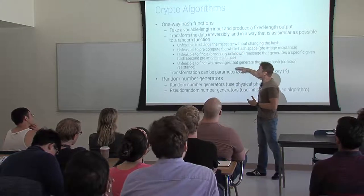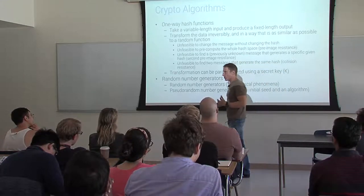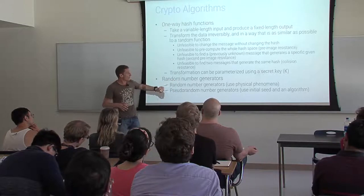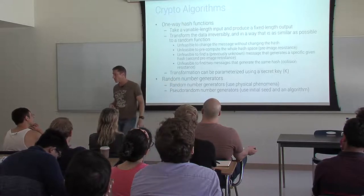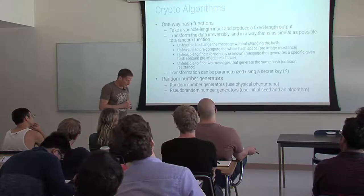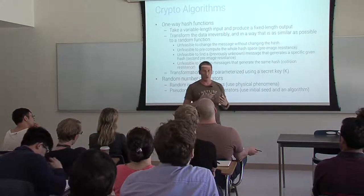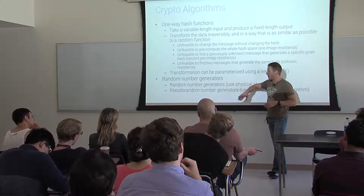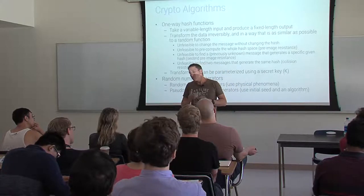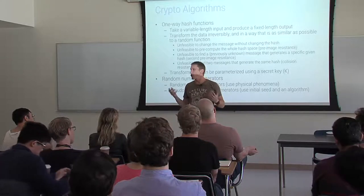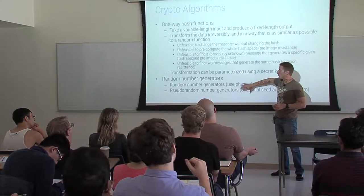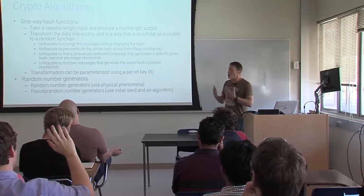You can parameterize the transformation using keys and all sorts of different properties. There are also random number generators — real random number generators that use physical phenomena like noise in electrical resistance, or pseudorandom number generators that take a seed and use an algorithm to generate a sequence of numbers that appears random enough. There are entire groups of researchers just generating these algorithms and showing which ones are best or worst.